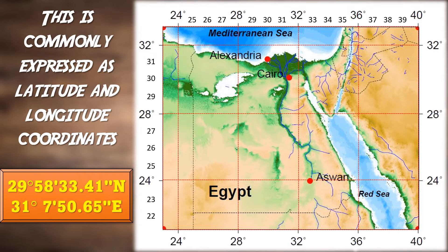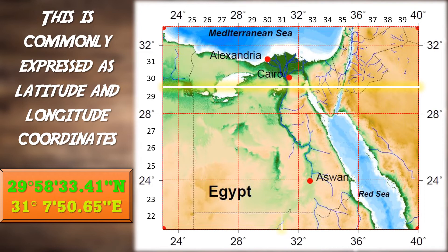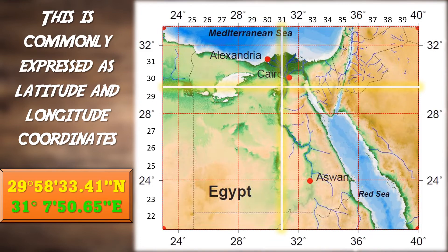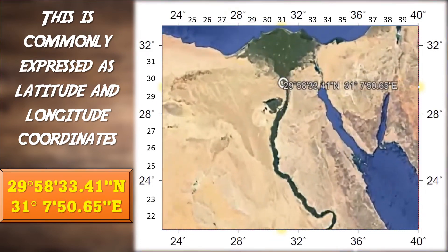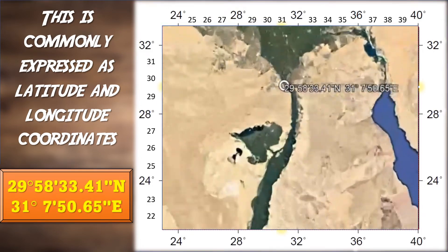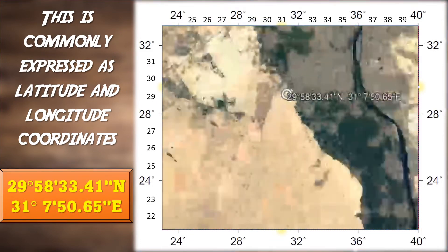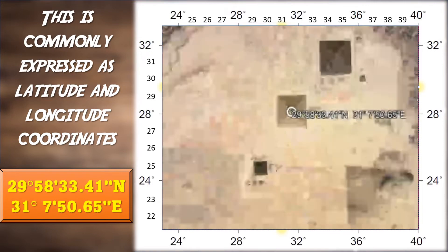Starting with latitude, we've got 29 degrees 58 minutes and 33 seconds north, giving us this line. And with longitude, that gives us 31 degrees 7 minutes and 50 seconds south, giving us this line. Where these two lines intersect reveals the absolute location of — you guessed it — the Great Pyramids of Egypt.